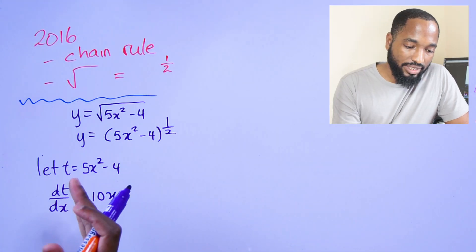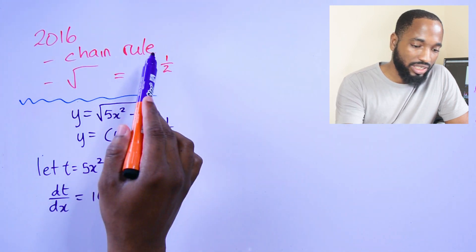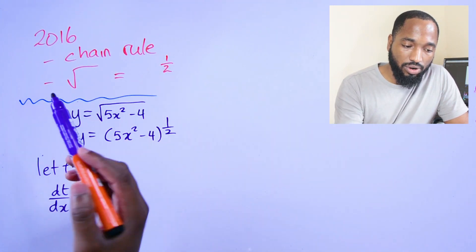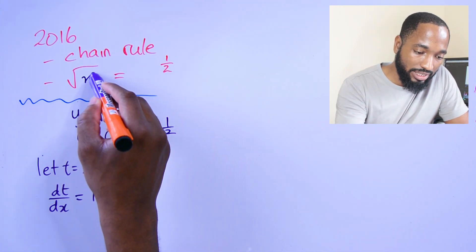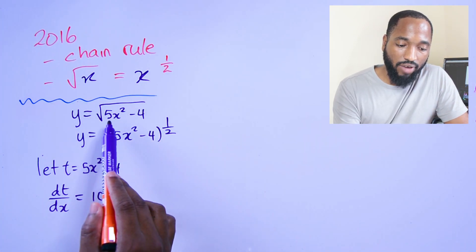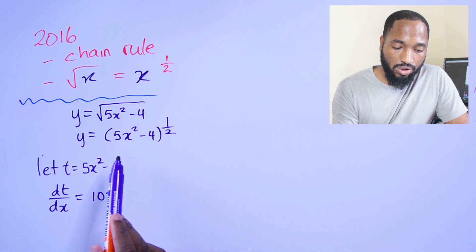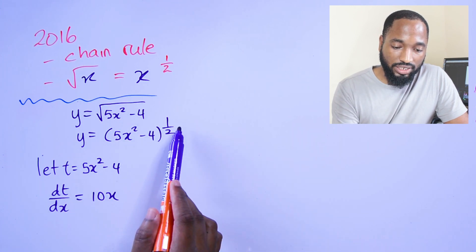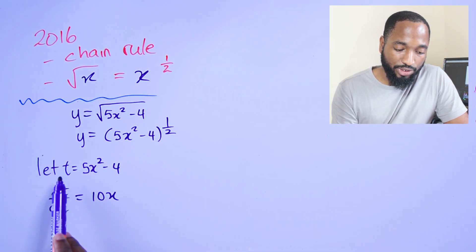I already started 2016. In 2016 it was just an application of the chain rule. You should know that the square root of x is the same as x to the power of a half. We'll differentiate y = √(5x² - 4). I switch it over into this form, which is neater.